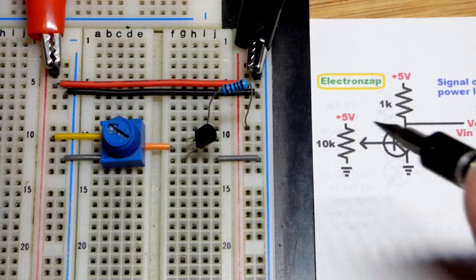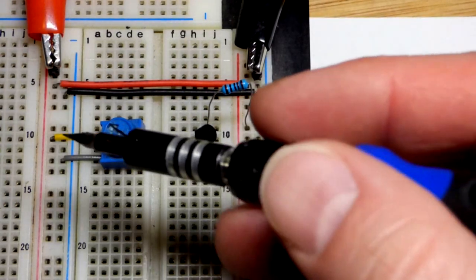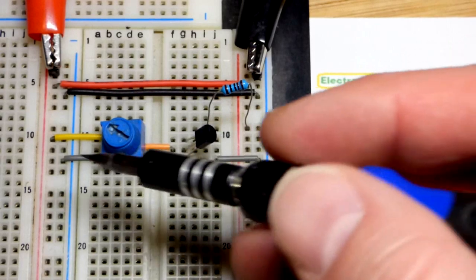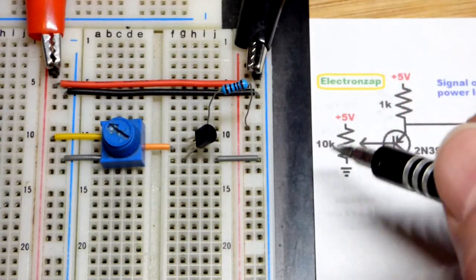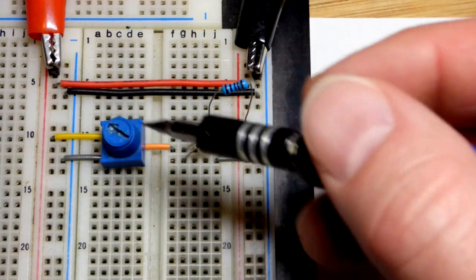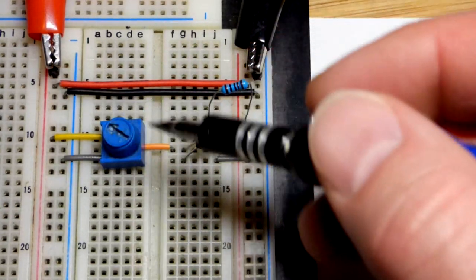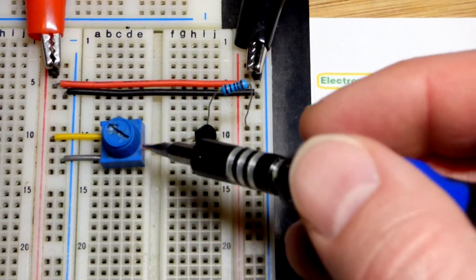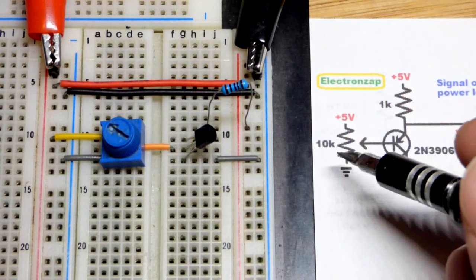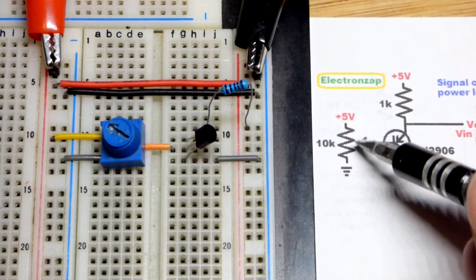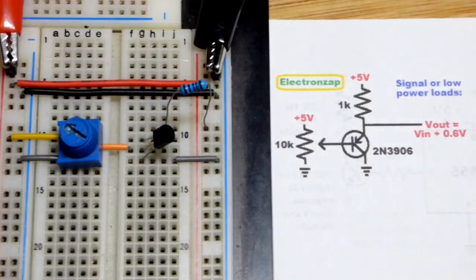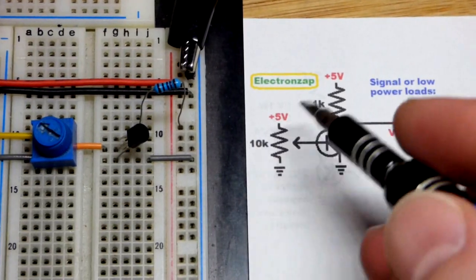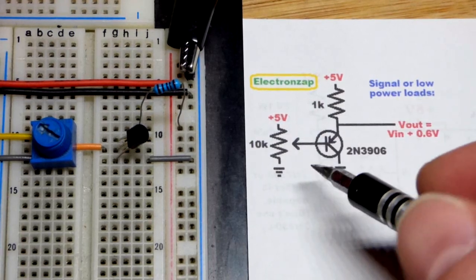So now we'll come to the schematic. There we have the trim pot, positive supply to one end of the resistive element and the negative supply to the other. It's a 10,000 ohm resistor from one terminal to the other. Middle terminal though is a wiper, it connects along that resistive element.